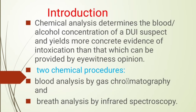Chemical analysis determines the blood alcohol concentration of a DUI suspect and yields more concrete evidence of intoxication than that which can be provided by eyewitness opinion. There are two chemical procedures to find out the amount of alcohol in body fluids: first is blood analysis by gas chromatography, and second is breath analysis by infrared spectroscopy.